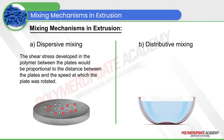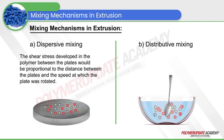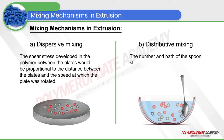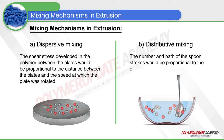Distributive mixing, on the other hand, is like putting two materials in a bowl and stirring them with a spoon. The number and path of spoon strokes will be proportional to the degree of mixing.